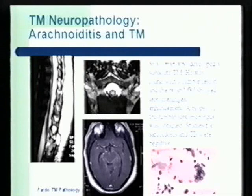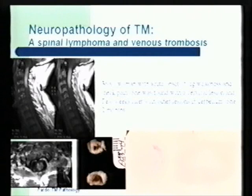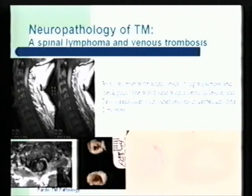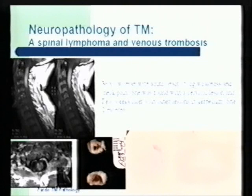Occasionally tumors can produce a picture of transverse myelitis. A patient had cervical myelopathy initially identified as transverse myelitis, but frequent MRIs later revealed additional lesions in the cerebellum, and we established the diagnosis of lymphoma. Lymphoma of the central cord is very rare. In this patient, the lymphoma occupied the entire cervical cord, and the lower segments showed central cord necrosis likely associated with venous system thrombosis as a result of the tumor.